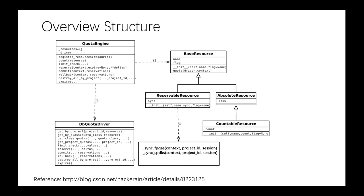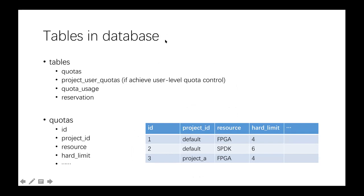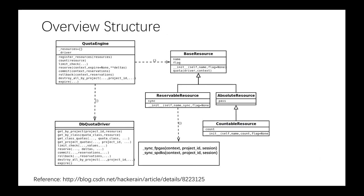So that distinction is going to have to be bolted on top of what we have today. Is it already there in Nova? I don't think it's there. So are we asking for placement to pick up this concept of reserve and then allocate, or are we saying that Cyborg is going to build that on top of and distinct from placement?